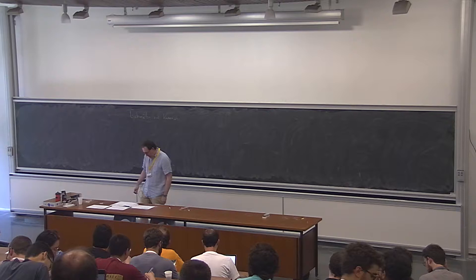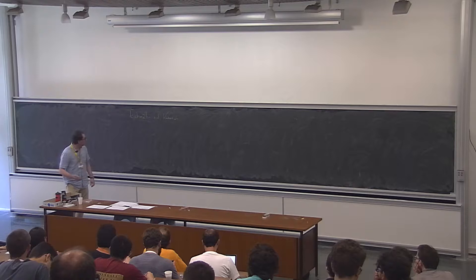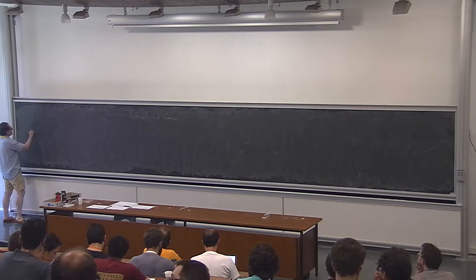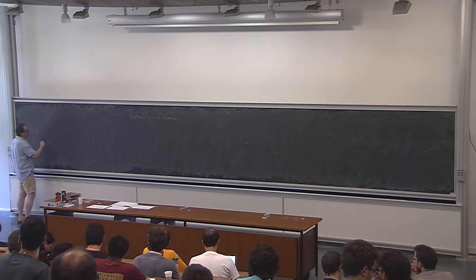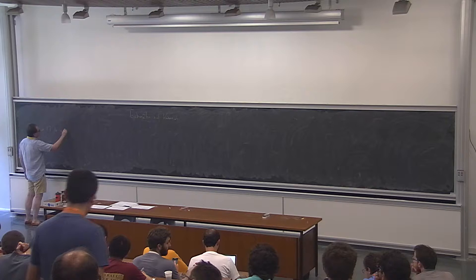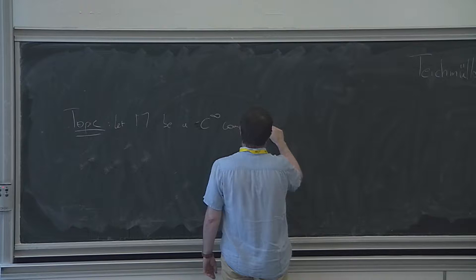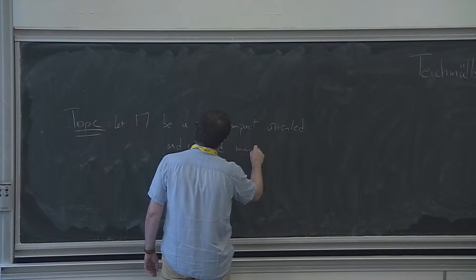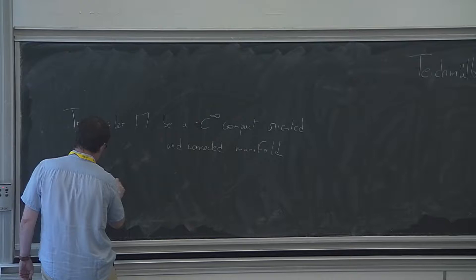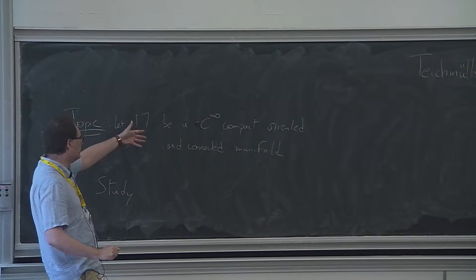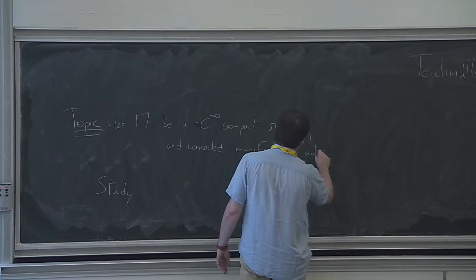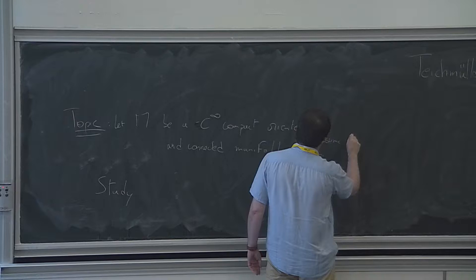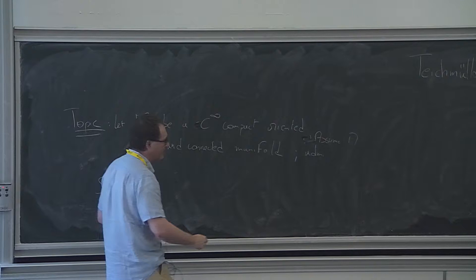Thank you very much for the invitation and for giving me the opportunity of this talk. My topic today is the following: you start with M, a smooth compact manifold, oriented and connected. And what you want to do is study this M, which admits complex structures — otherwise there is nothing to say, because I am interested in studying the set of complex structures on M. So assume M admits complex structures.